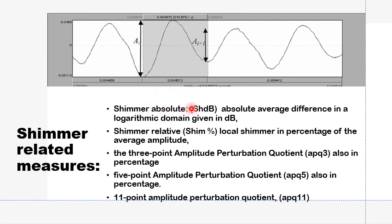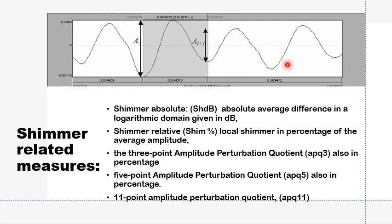If this absolute shimmer is presented as a percentage of the average amplitude of the glottal signal across the time period, it is called the shimmer relative or shimmer percentage. There are other ways of quantifying shimmer, including running averages of three, five, or eleven cycles at a time — we will go through these ways of measuring shimmer one by one.